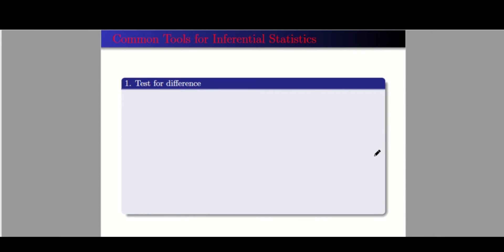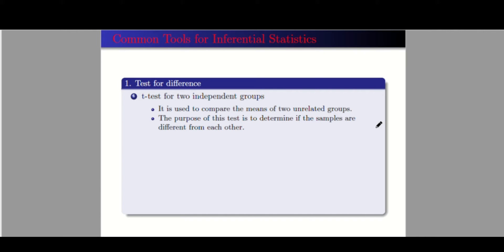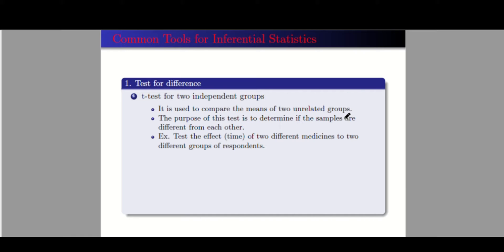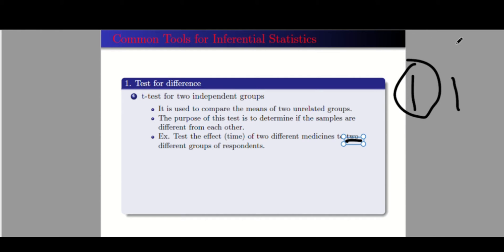We have some common tools for inferential statistics. The first is the test for difference. The t-test for two independent groups is used to compare the means of two unrelated groups, to determine if the samples are different from each other. For example, if you want to test the effect of two different medicines on two different groups — you give something to one group and something to another group, then compare the results of these two unrelated groups.